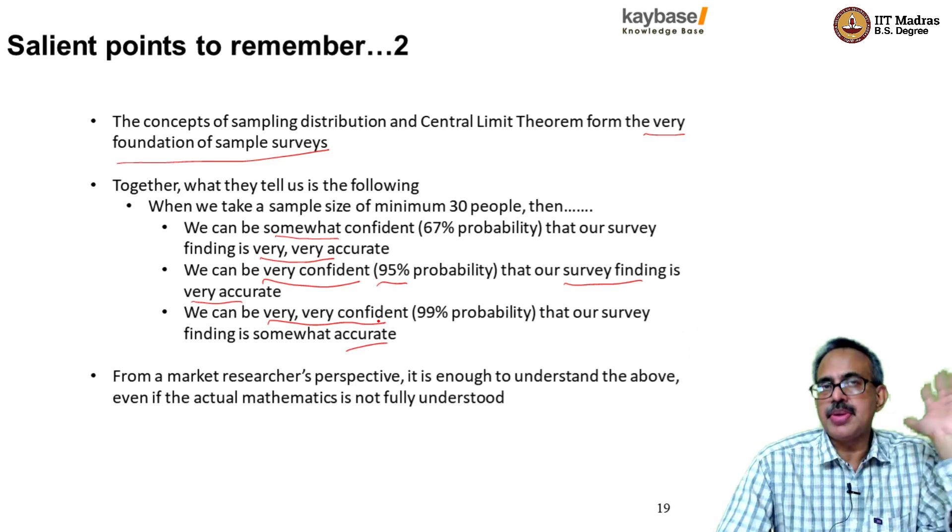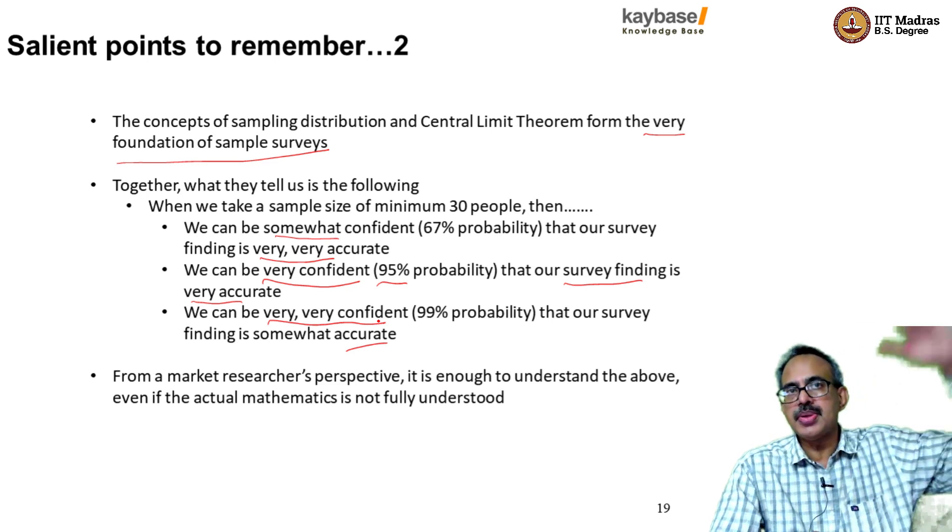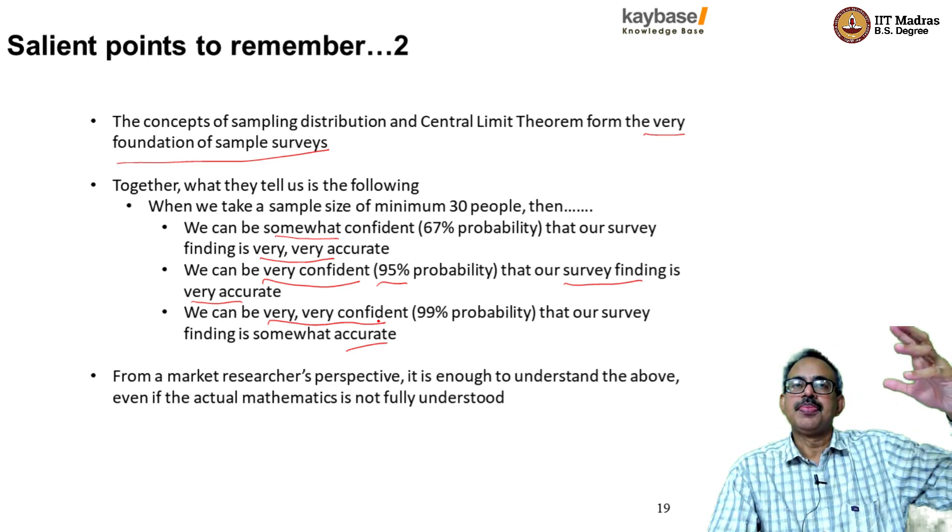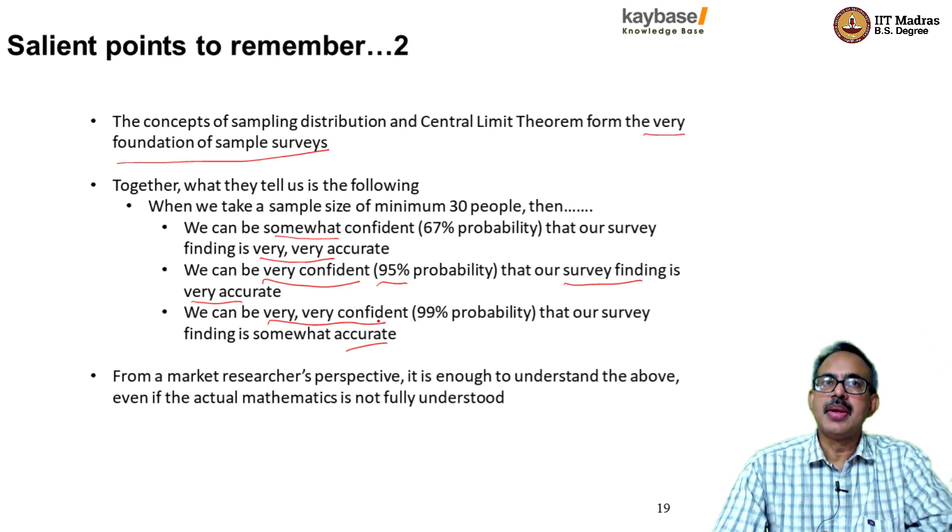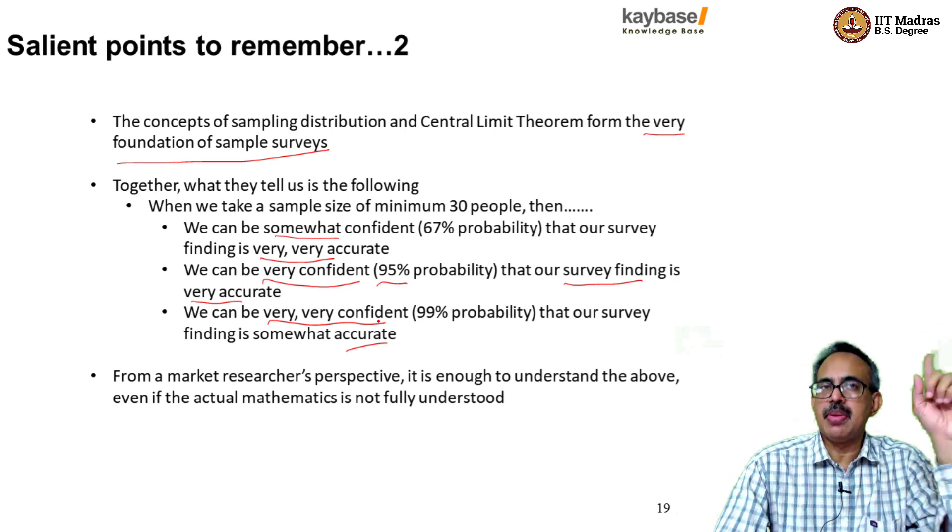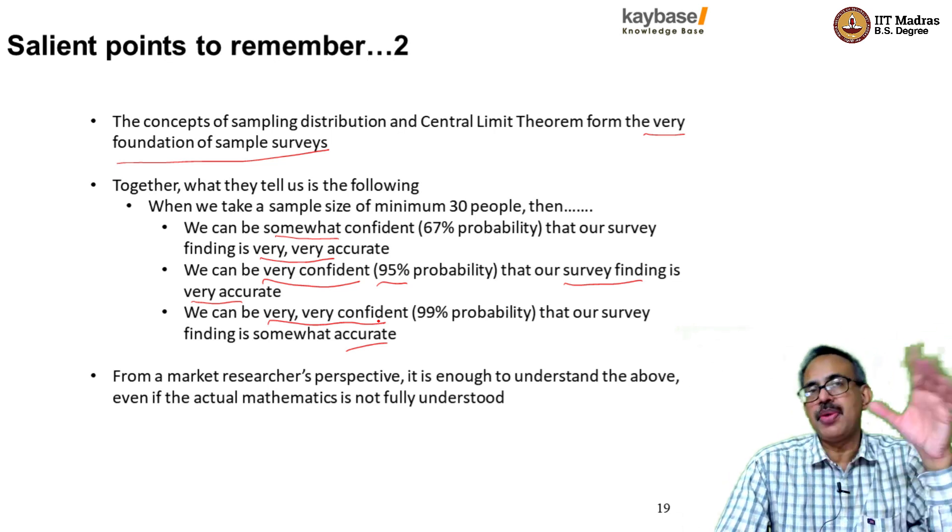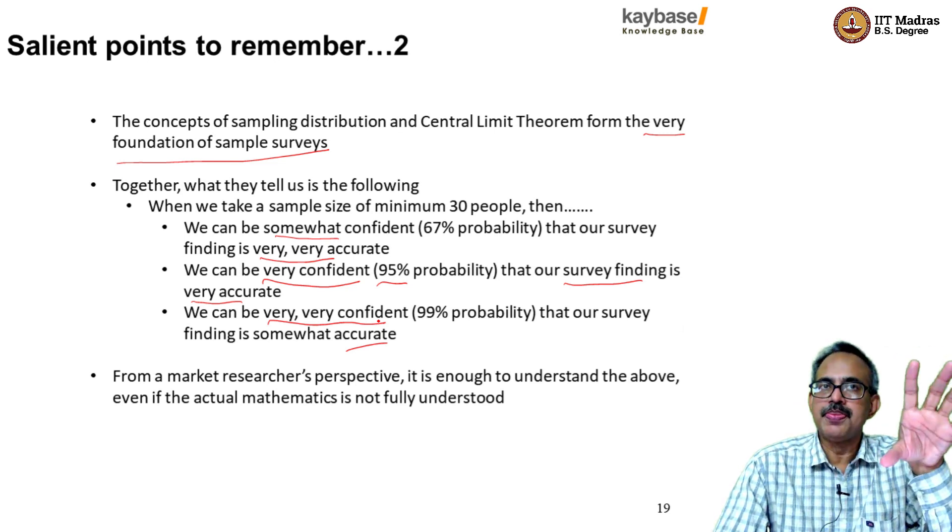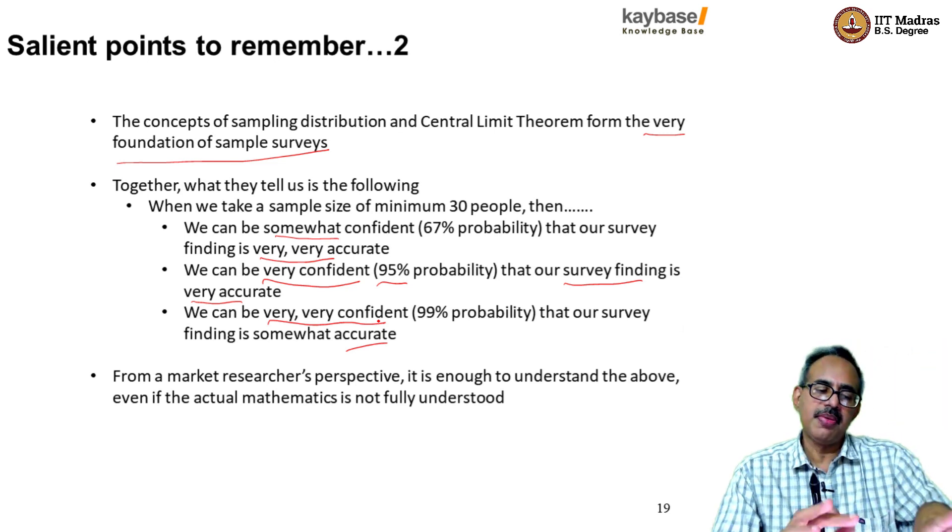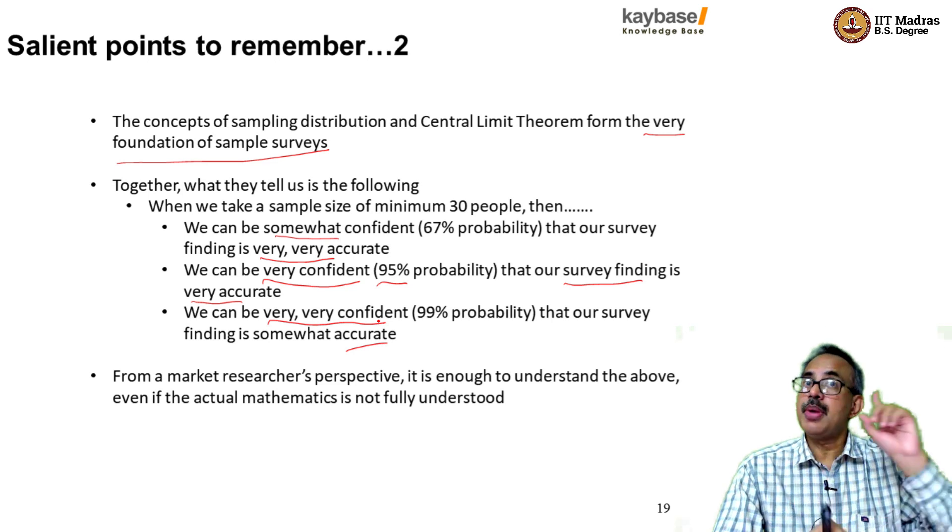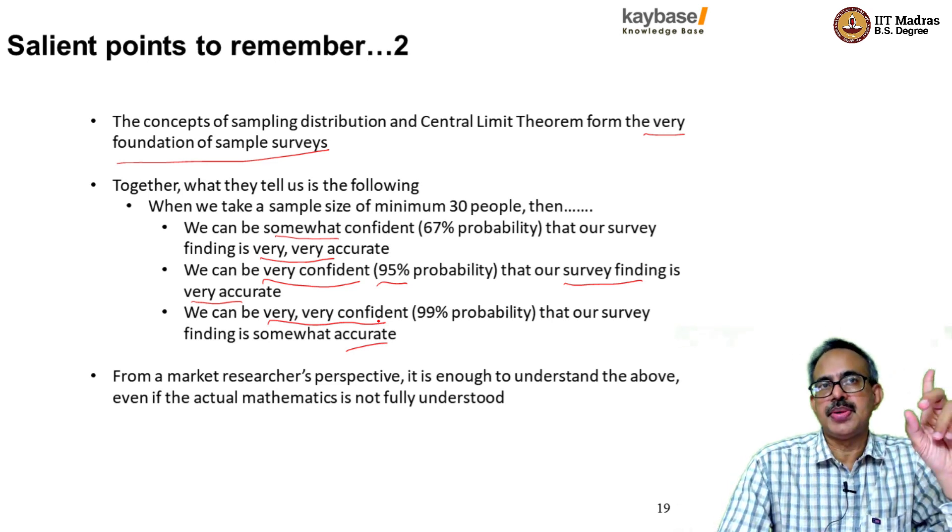Even if you haven't understood the entire mathematics of take a thousand samples, thousand surveys, each time sample size 100, calculate the mean of each of those thousand, plot it like a frequency distribution. Even if you don't get all that intuitively, it doesn't matter. It is enough if you remember this bit for a market researcher. It's not enough for the statistician. Shall we close this chapter here? Any further questions?